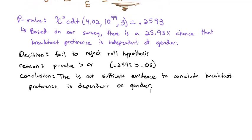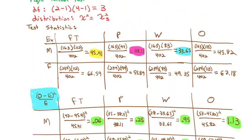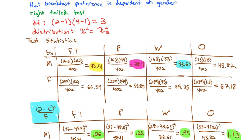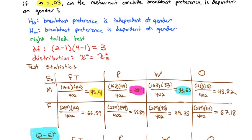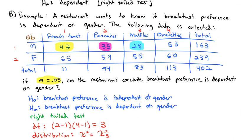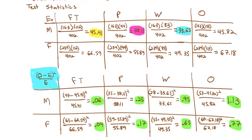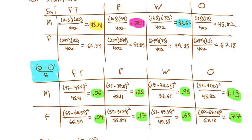And that is how we do a chi-squared test for independence. It takes a little time to calculate the test statistic running through those calculations, but it's not too difficult — it just takes time to run it out. Go ahead and try a few of these from the homework, and we'll do a few more in class. We'll see you then.